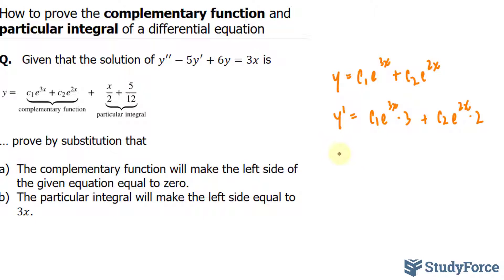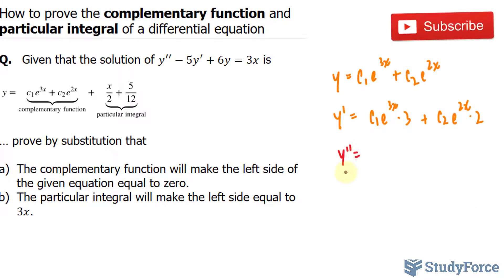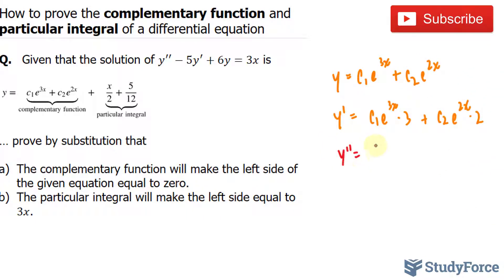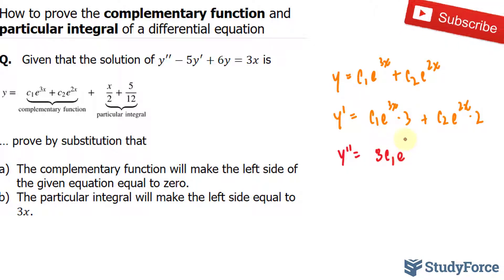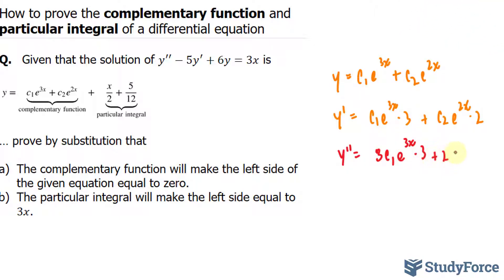Next, I'll take the second derivative. We have y double prime equals 3 times c1·e^(3x) times 3, plus 2·c2·e^(2x) times 2, giving us 9c1·e^(3x) plus 4c2·e^(2x).